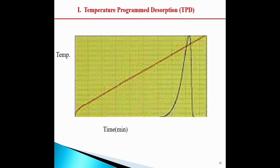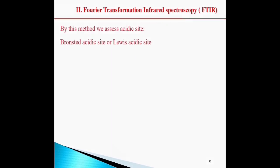In temperature programmed desorption, the key variables are temperature and time. By FTIR spectroscopy, we assess the acid site type — Brønsted acid site or Lewis acid site.